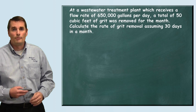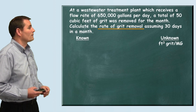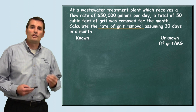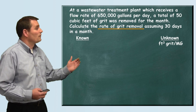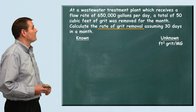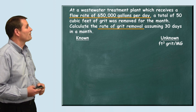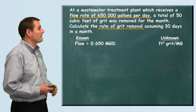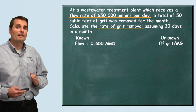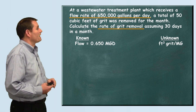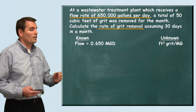As always we want to pull out our known and unknown information. They want us to find the rate of grit removal, so we're looking for cubic feet of grit removed for every million gallons of flow — cubic feet per million gallons. The average daily flow into the plant is 650,000 gallons per day, which we write as 0.650 MGD.